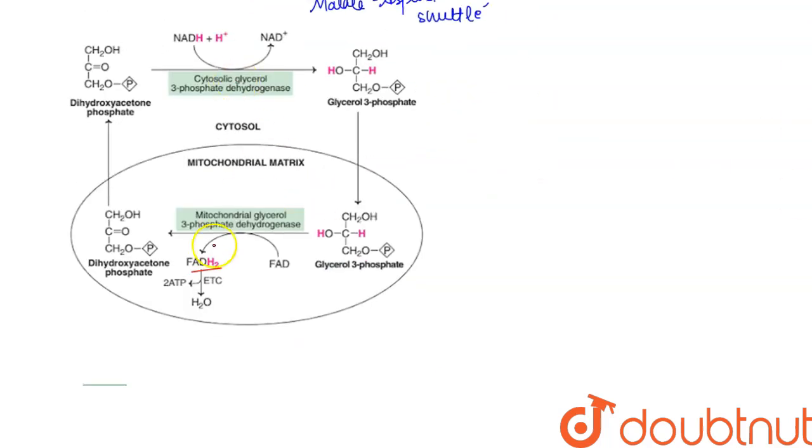Here, we are getting only 1 FADH2 molecule. So we will have 1 FADH2 molecule which means 1.5 ATP total gain.